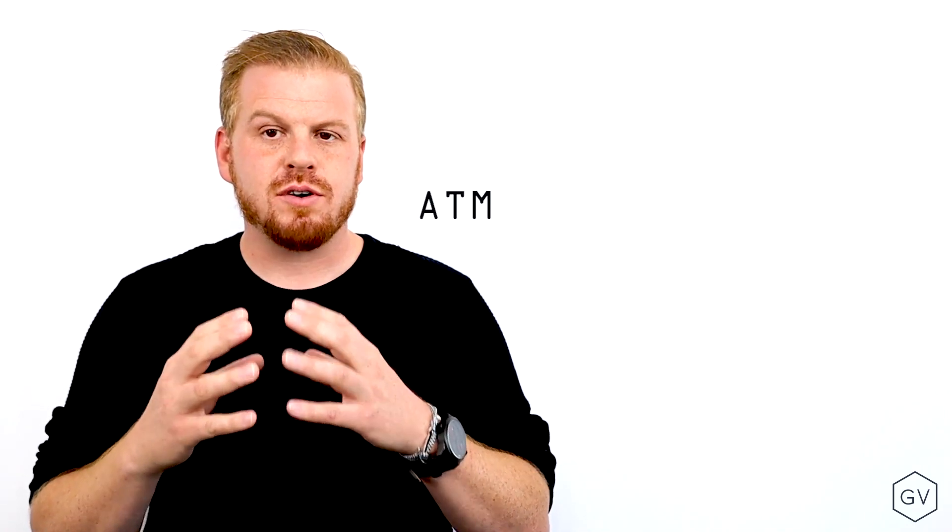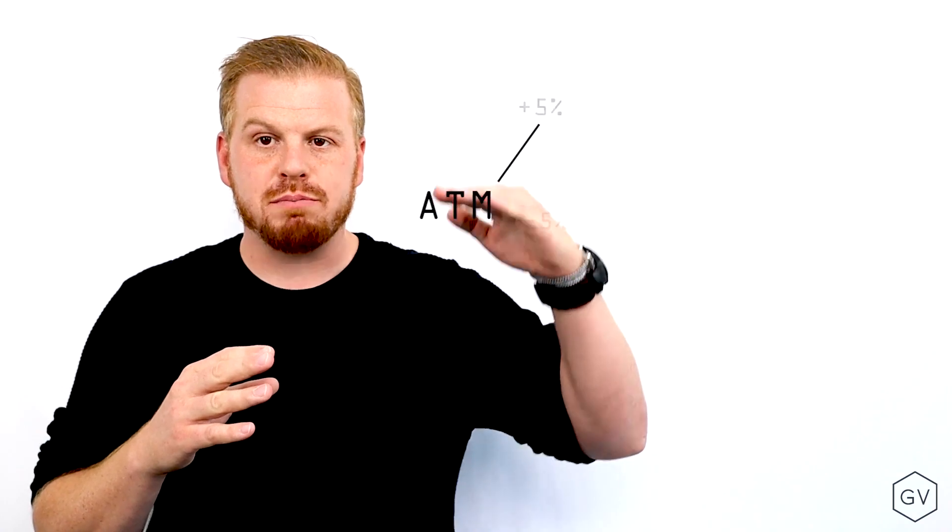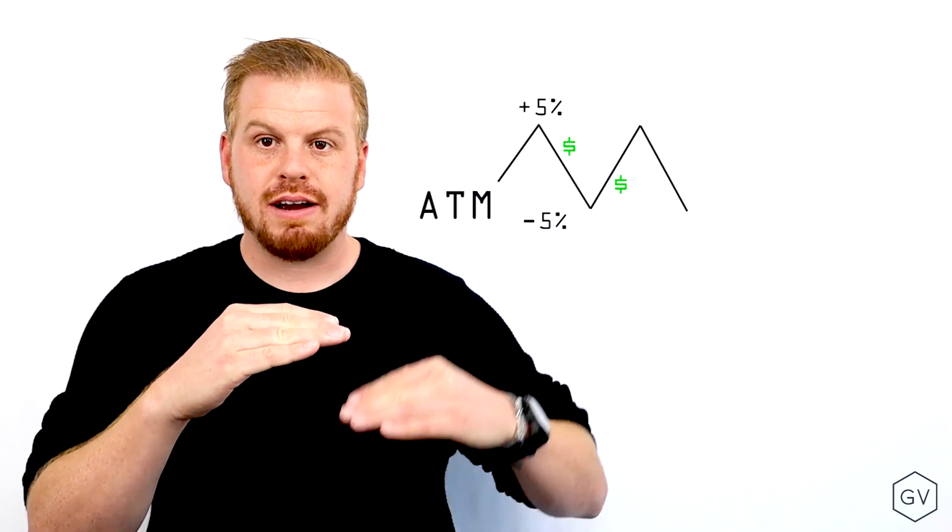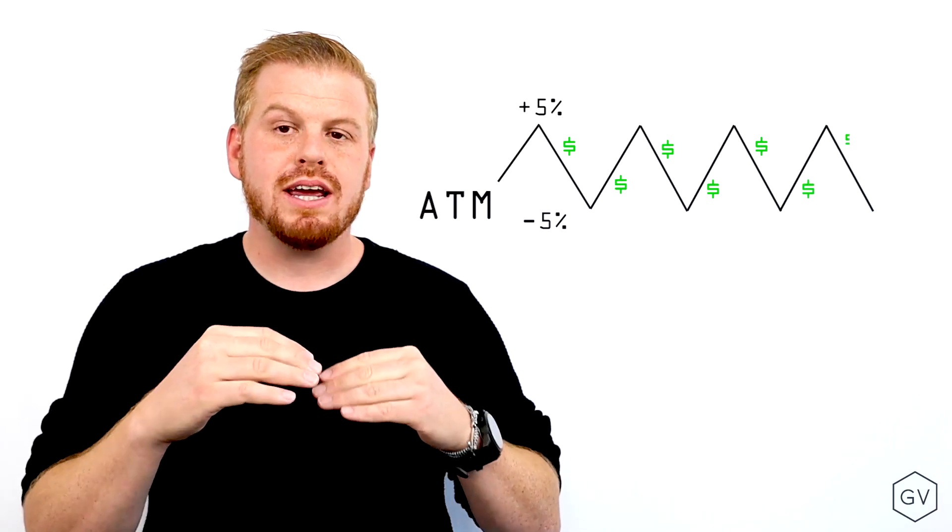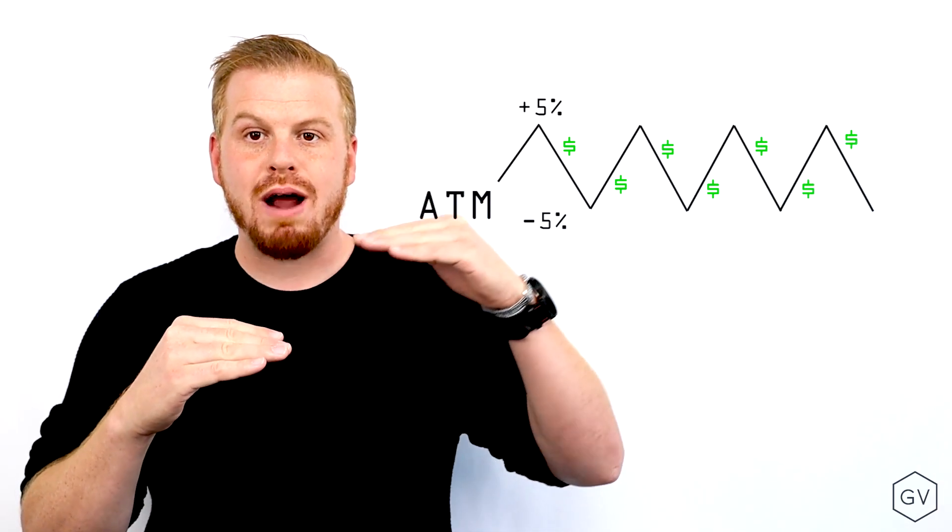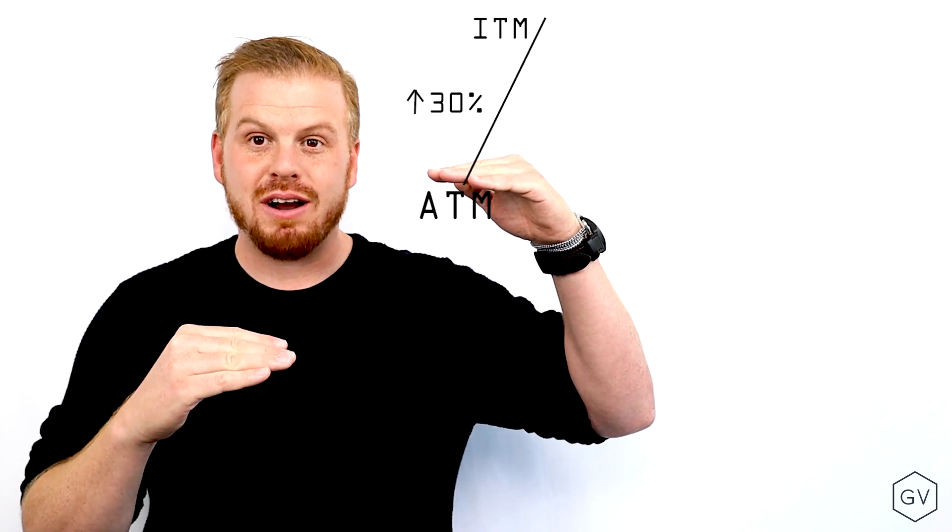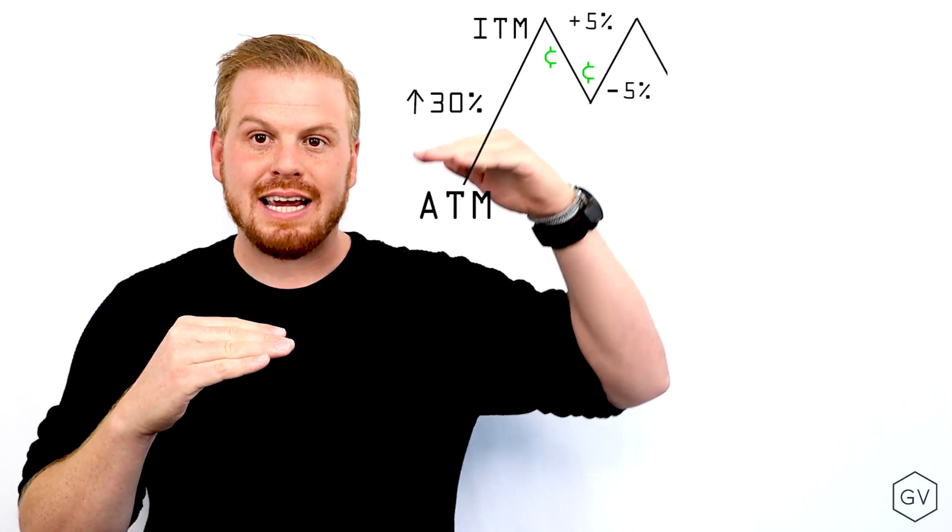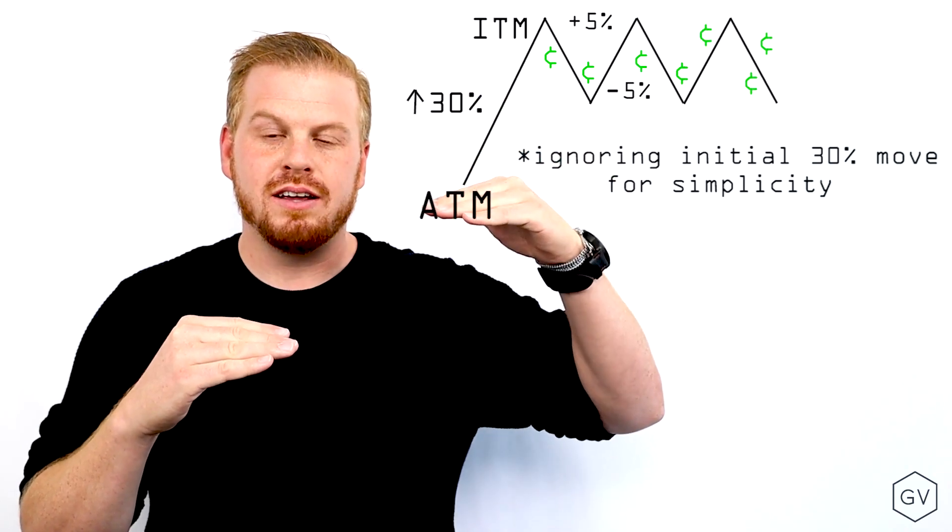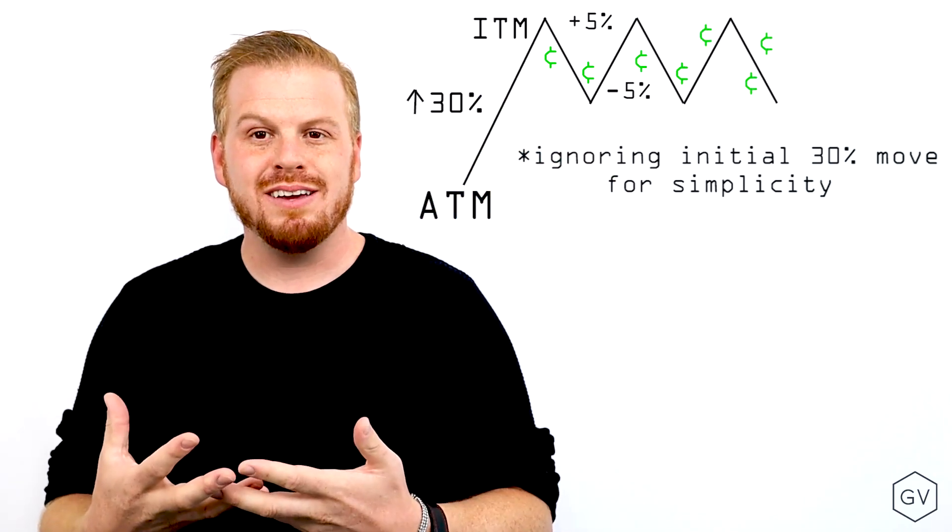So let's say in this first example, the underlying moves 5% around your at the money strike constantly. Well, that is going to generate more income than if the underlying first rallies 30%.